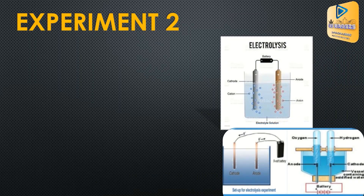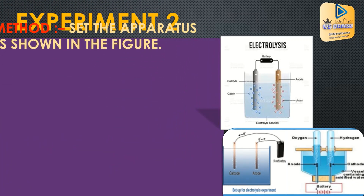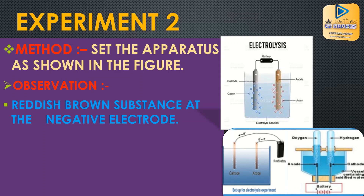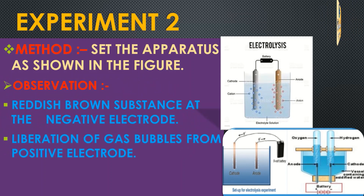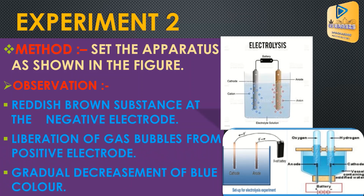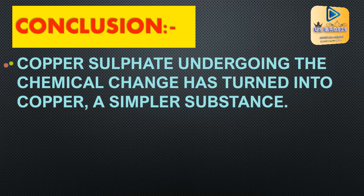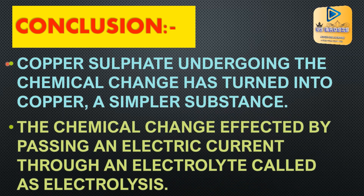Second experiment: set up the apparatus as shown in the figure. You can observe copper deposited as a substance on the negative electrode, liberation of gas bubbles from the positive electrode, and a gradual decrease of the copper sulphate solution. Conclusion: copper sulphate undergoes chemical change and turns into copper, a simpler substance. The chemical change effected by passing an electric current through an electrolyte is called electrolysis.